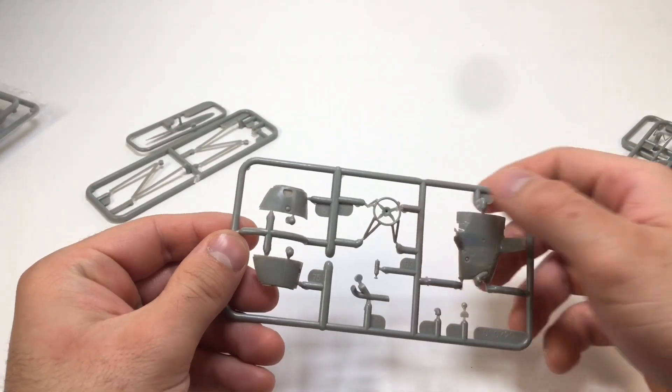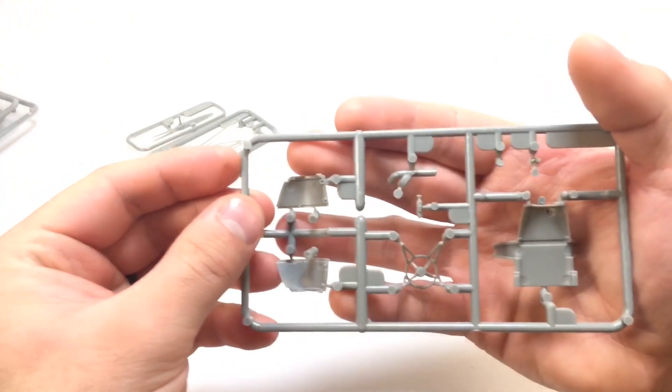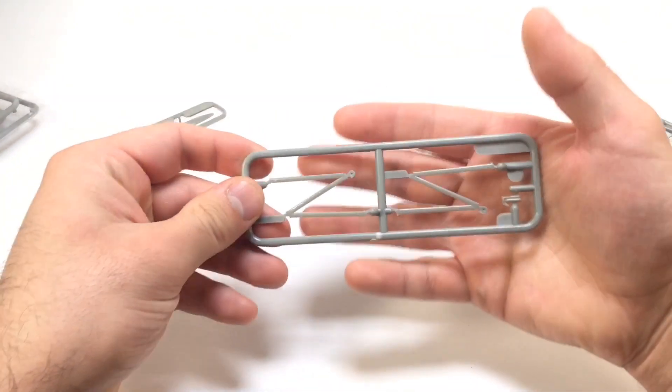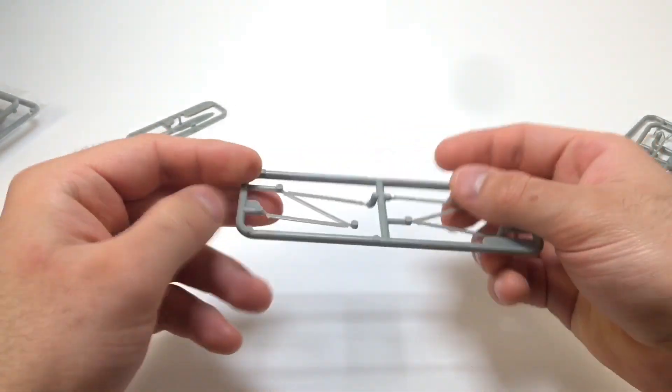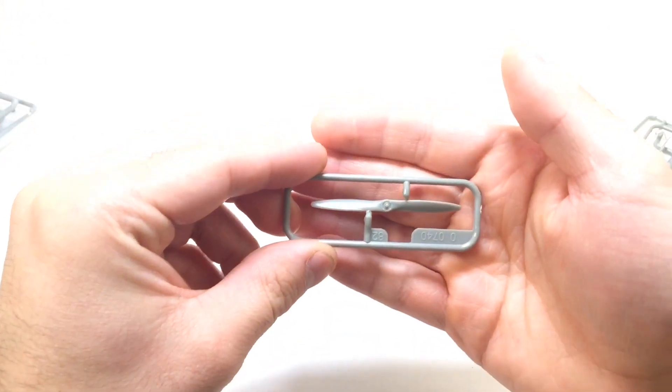Looks like we've got the firewall, pieces of the fuselage. Looks to be we've got some struts, looks like the landing gear. We've got a propeller.